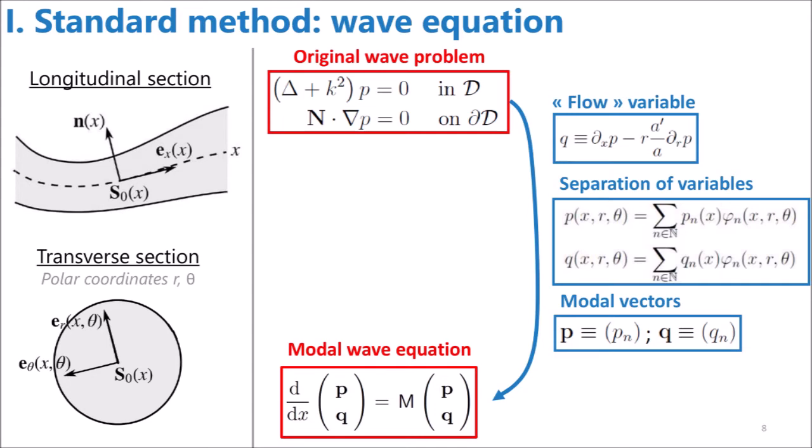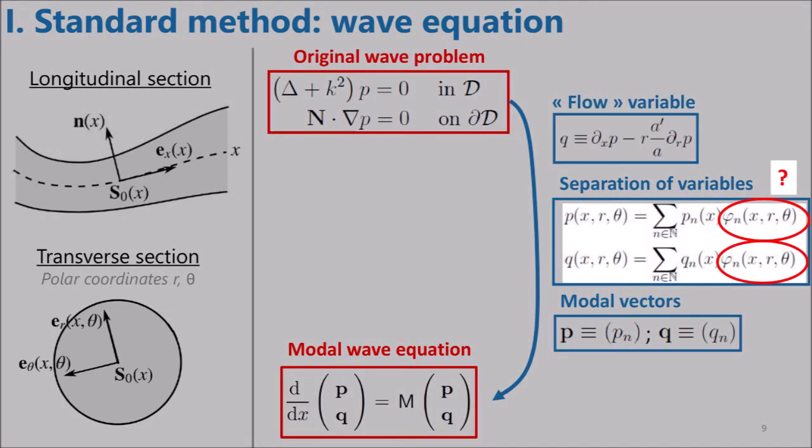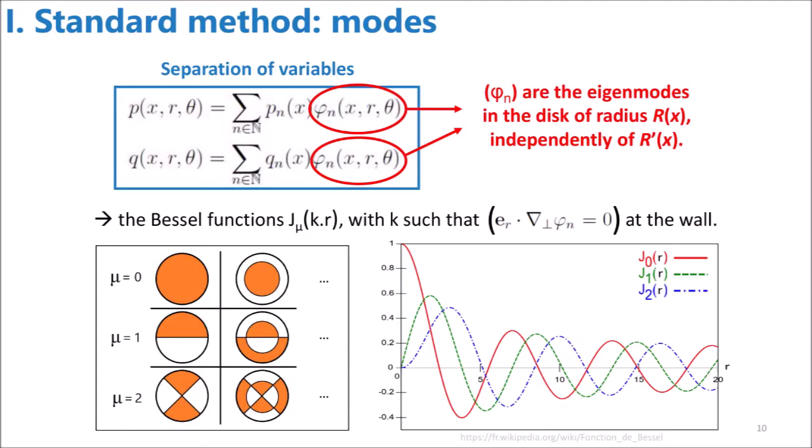Thanks to this modal wave equation and the input-output conditions, we can entirely solve the problem. Now let's go back a little bit and focus on those transverse functions. For any given wall radius, the transverse functions are chosen to be the modes of the local circular cross-section, ignoring the derivative of the radius along x. A number of you might already know about such modes, they are the Bessel functions expanded such that the boundary condition is satisfied.